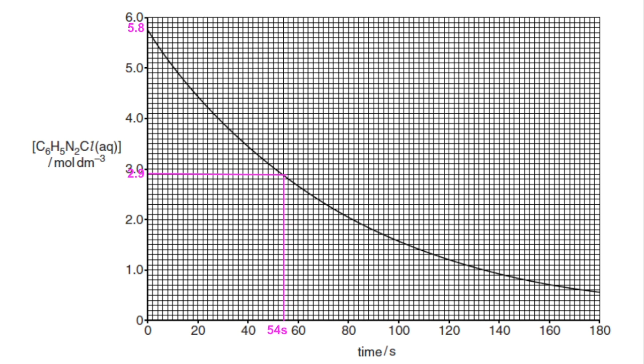You then measure another half-life. So that's going to be the time it takes to go from 2.9 down to half of that which is 1.45. So again you work out the time period that that takes and we're getting 56 seconds now. So they're not identical but they're very close together.